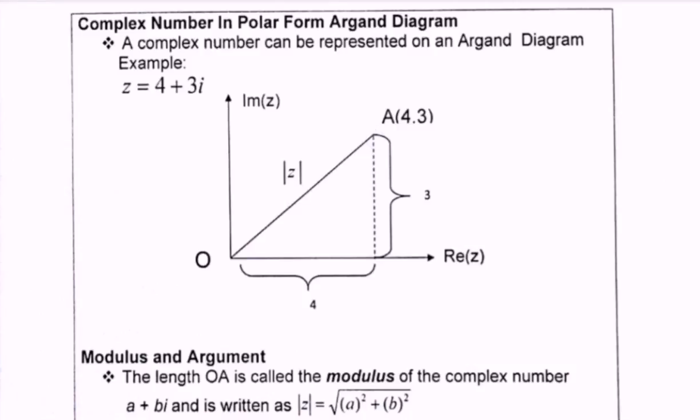So here will be the location for the situation where we have 4, 3. The 4 is the real part, and the 3 is the imaginary part.